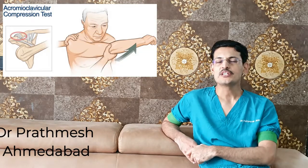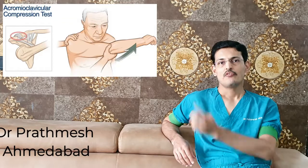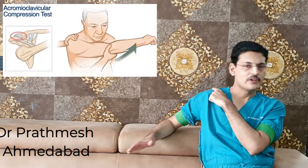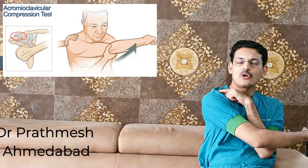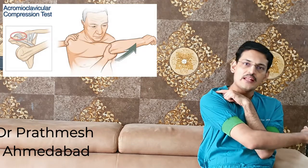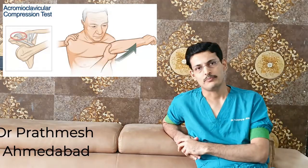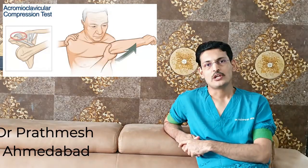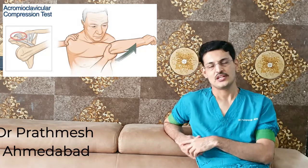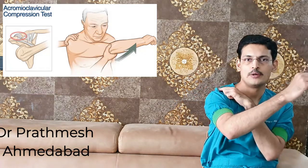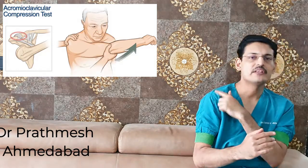There are three main clinical tests. The most sensitive is the cross-body adduction test: place your thumb on the acromioclavicular joint and ask the patient to move the arm across the chest. If it is painful, this is the most sensitive test. The second is the acromioclavicular resisted extension test, in which the hand is extended against resistance with a finger over the joint — pain is suggestive of AC joint arthritis.